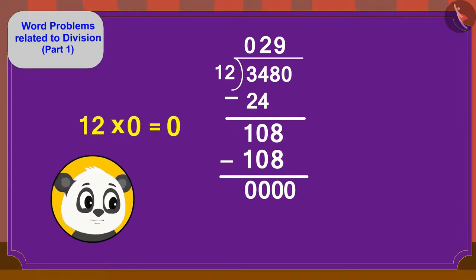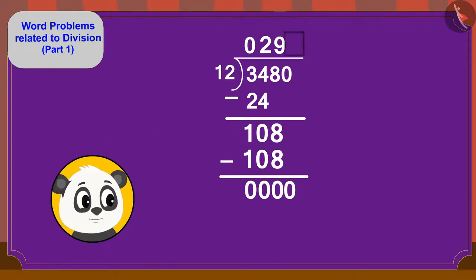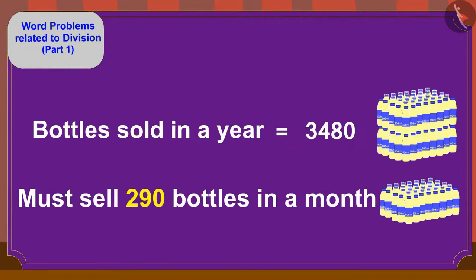12 times 0 is 0. So, we will write 0 up here and 0 minus 0 equals 0. Golu must sell 290 masala milk bottles every month.